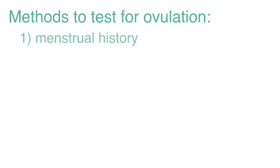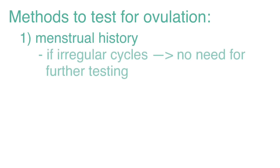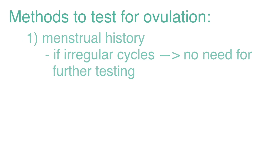The first is menstrual history. An important point is that if cycles are irregular, there's no need for further testing for ovulation. You can assume ovulation is not occurring.